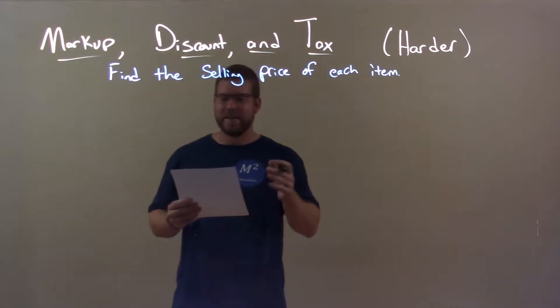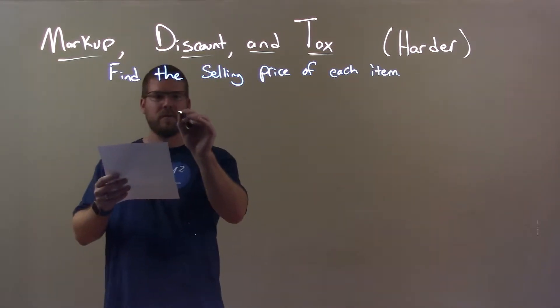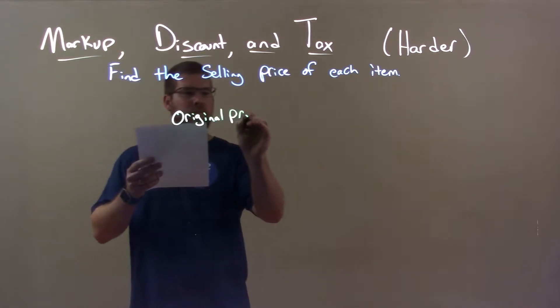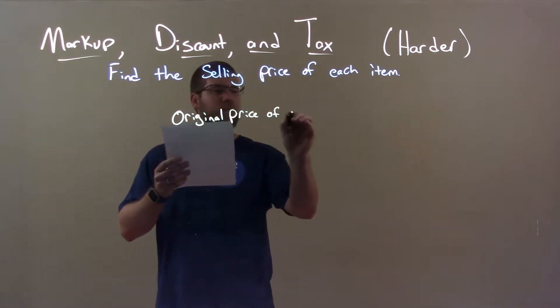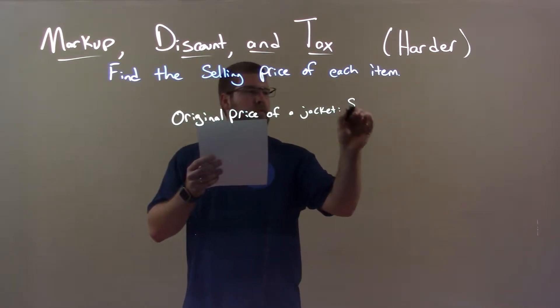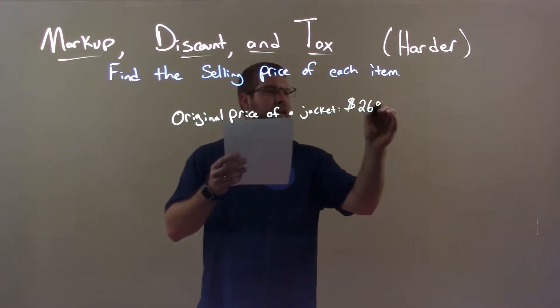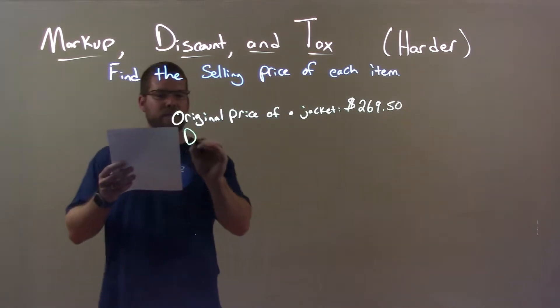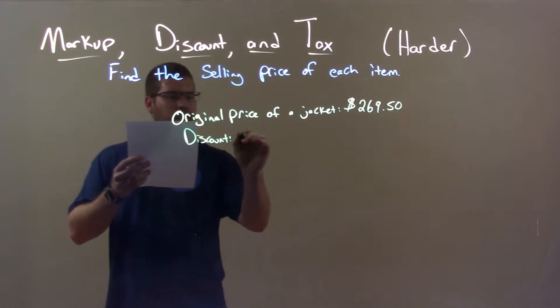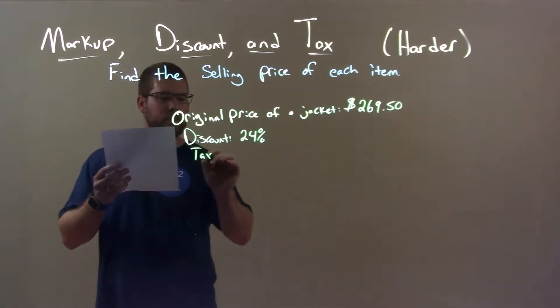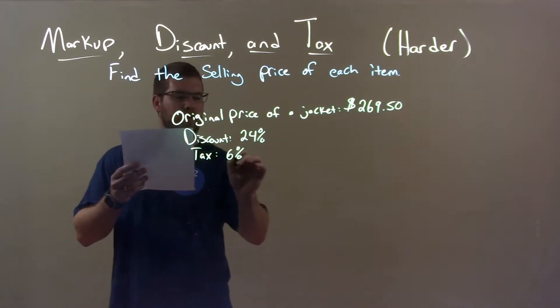If I was given this item, the original price of a jacket is $269.50. It's discounted 24% and it's taxed at 6%.